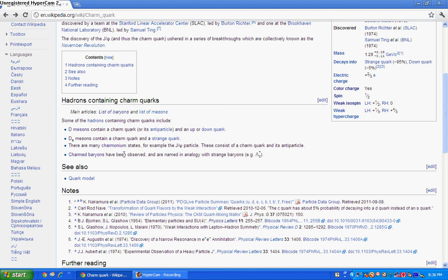It's an example of charmonium, which basically means there's a charm quark and an anti-charm quark. There's also D-mesons, D-sub-strange mesons, and charmed baryons.